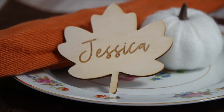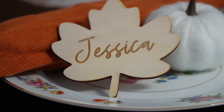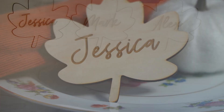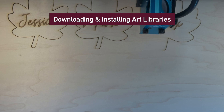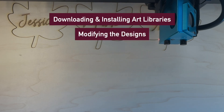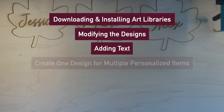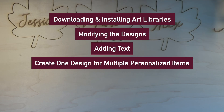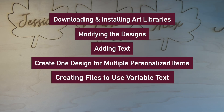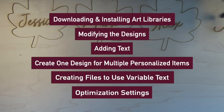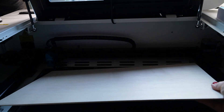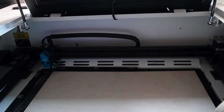The project we'll be making today is a leaf place card. To do this, we'll cover downloading and installing the Lightburn art libraries, modifying the designs to suit your needs, adding the text to the design, how to use variable text to create one design and use it for multiple personalized items at once, creating the files needed to use variable text, and optimization settings to improve the speed of your job. We're keeping it super simple today, so the only supply you'll need to follow along is a plywood of your choice.